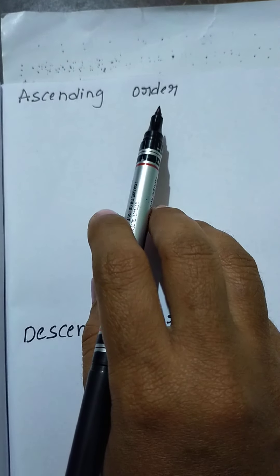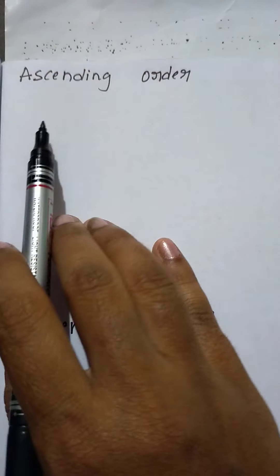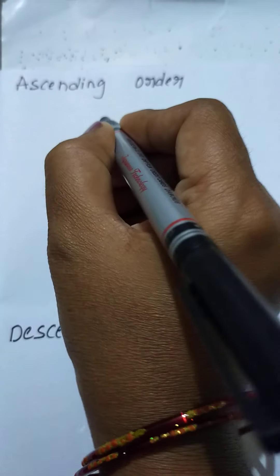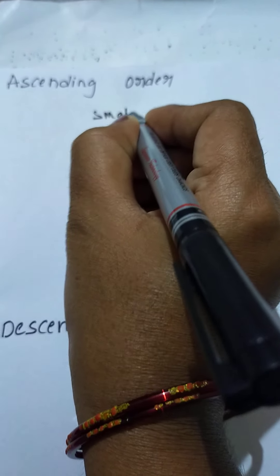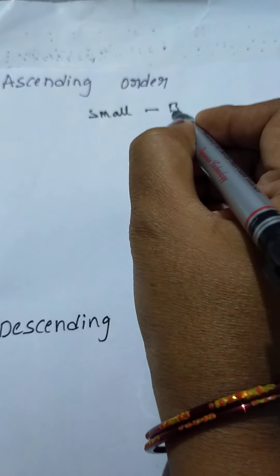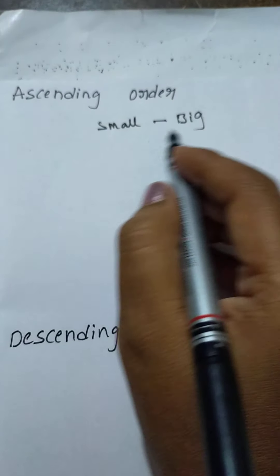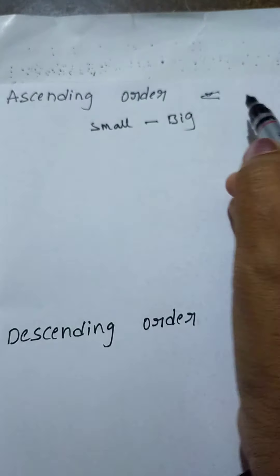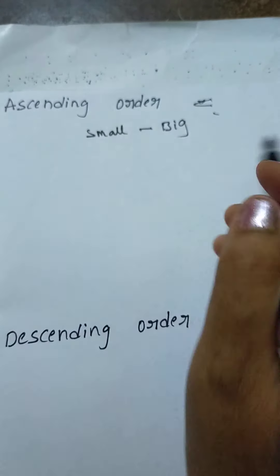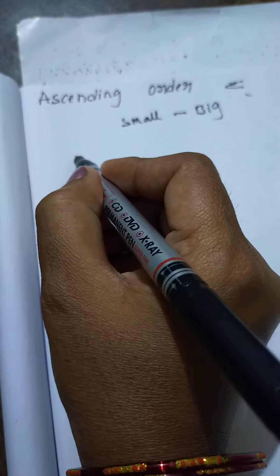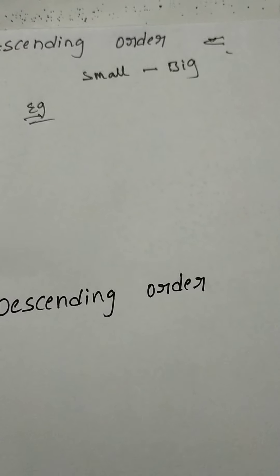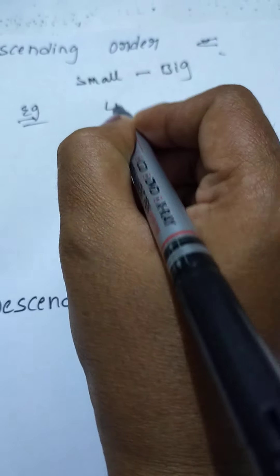Our next topic is ascending order. Ascending order means smallest to biggest — the order from small to big. In this situation, use less than. The ascending order uses less than, from smallest to biggest. I will give you an example.